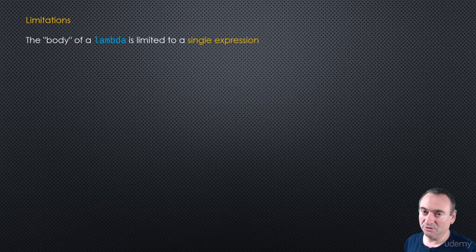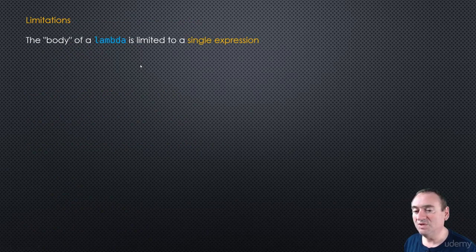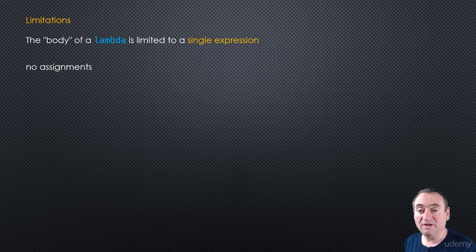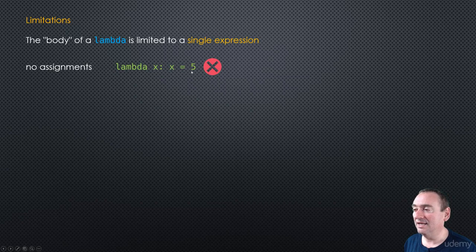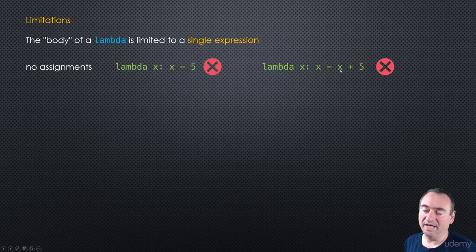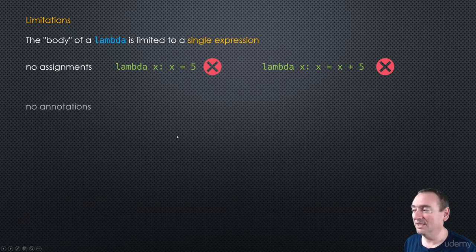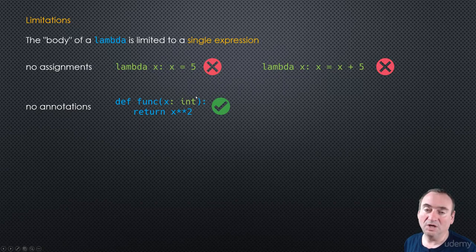Now there are some limitations to lambdas. The body of a lambda is limited to a single expression — which means you cannot do assignments inside a lambda function. You can create variables and all kinds of stuff in a regular function, but in a lambda you're limited to a single expression. So you can't say 'lambda x: x = 5' — that's not going to work. You also can't do 'lambda x: x += 5', since that's just an assignment. It won't work either.